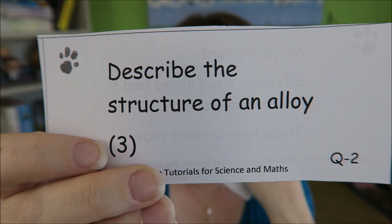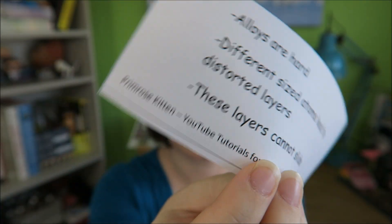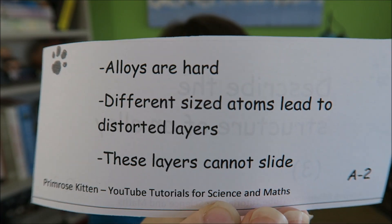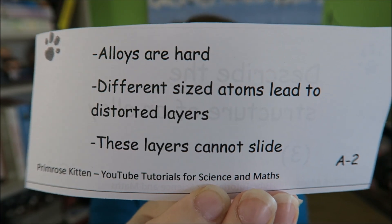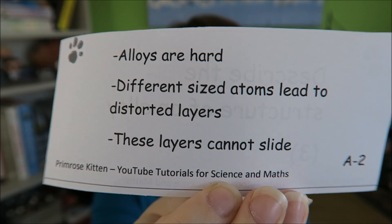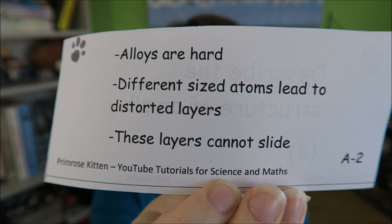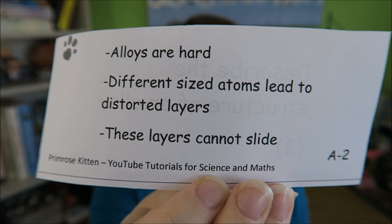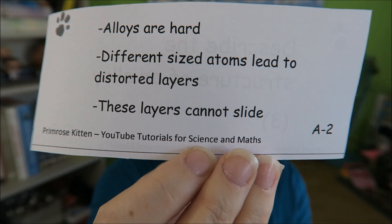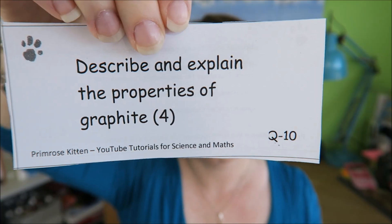Describe the structure of an alloy. Alloys are hard. They have different sized atoms, which disrupt the layers, so they have distorted layers. These layers cannot slide, and because they cannot slide, it means they are hard.